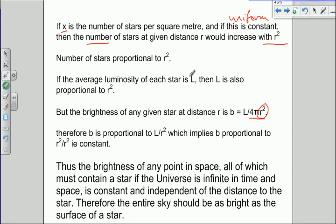If we assume that the luminosity on average is L, then L is also proportional to r². So L is proportional to r², but the brightness is proportional to 1 over r². What we're interested in is the brightness of the sky. The brightness is proportional to L over r², ignoring the 4π. But if L is proportional to r², then the brightness is proportional to r² over r², i.e., the brightness of the sky is constant.